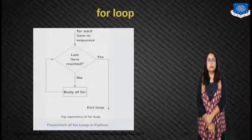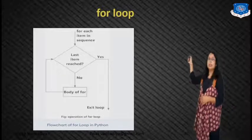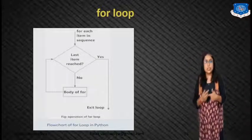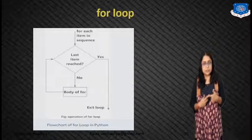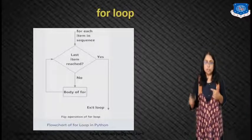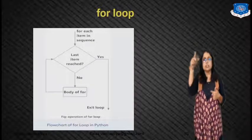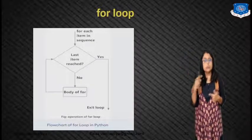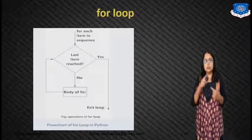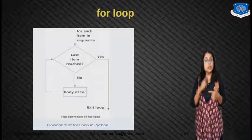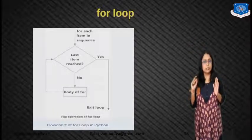Next we will see the flowchart. First of all, for each item in a sequence, it will check: last item is reached? No. Then body of the for loop is executed and again it will check. Again take the next item and see if it is the last item. If no, the process continues. If answer is yes, then it exits the loop.